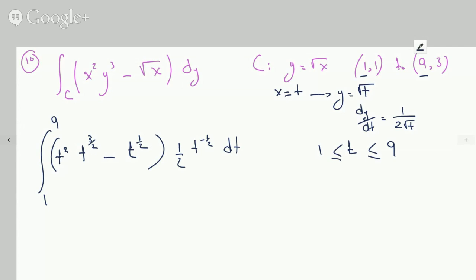This is seven halves times minus half. The half becomes t to the three halves, minus t to the negative half times t to the half is just one because it's t to the zero.